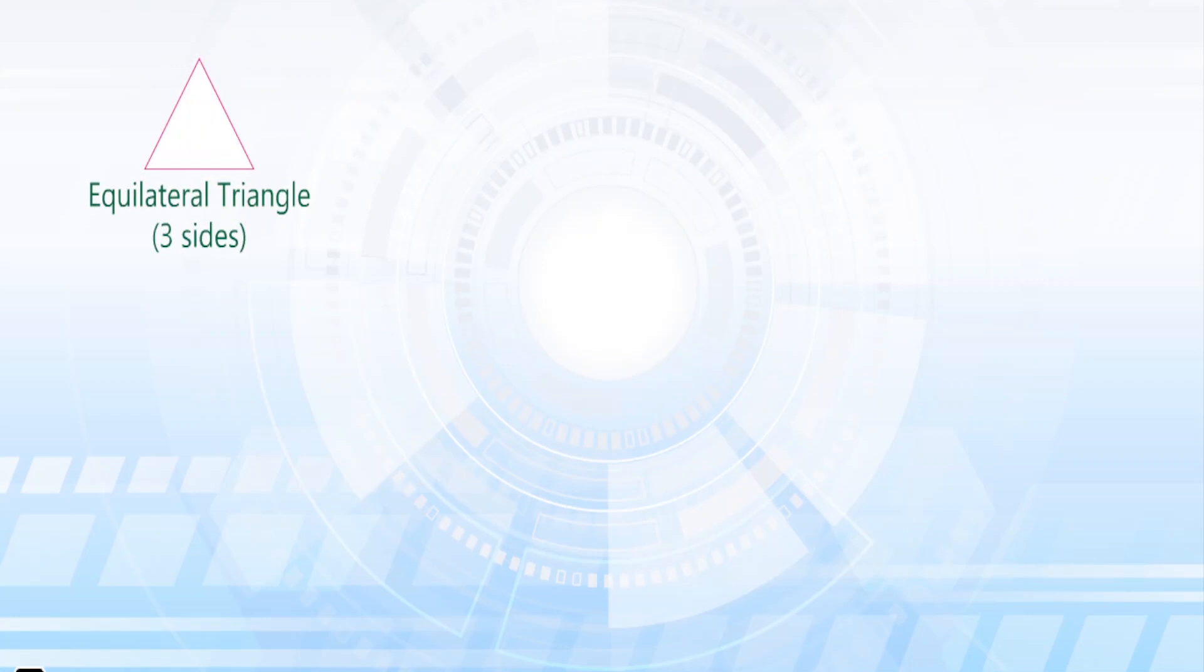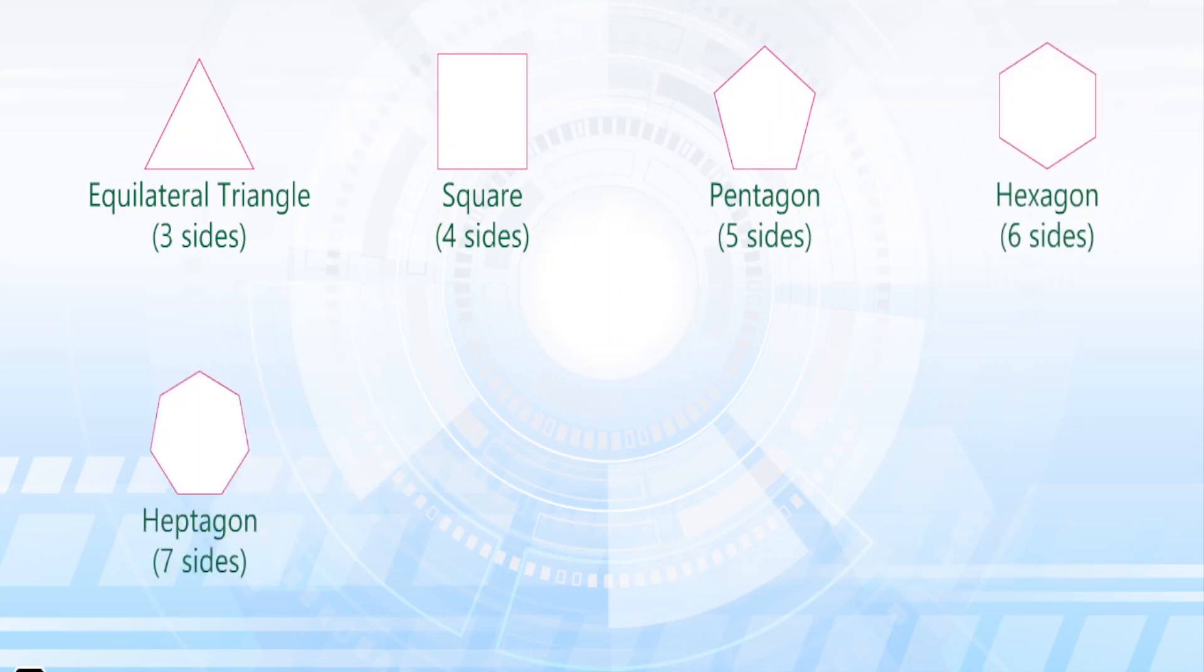Equilateral triangle, 3 sides; square, 4 sides; pentagon, 5 sides; hexagon, 6 sides; heptagon, 7 sides; octagon, 8 sides; nonagon, 9 sides; decagon, 10 sides.